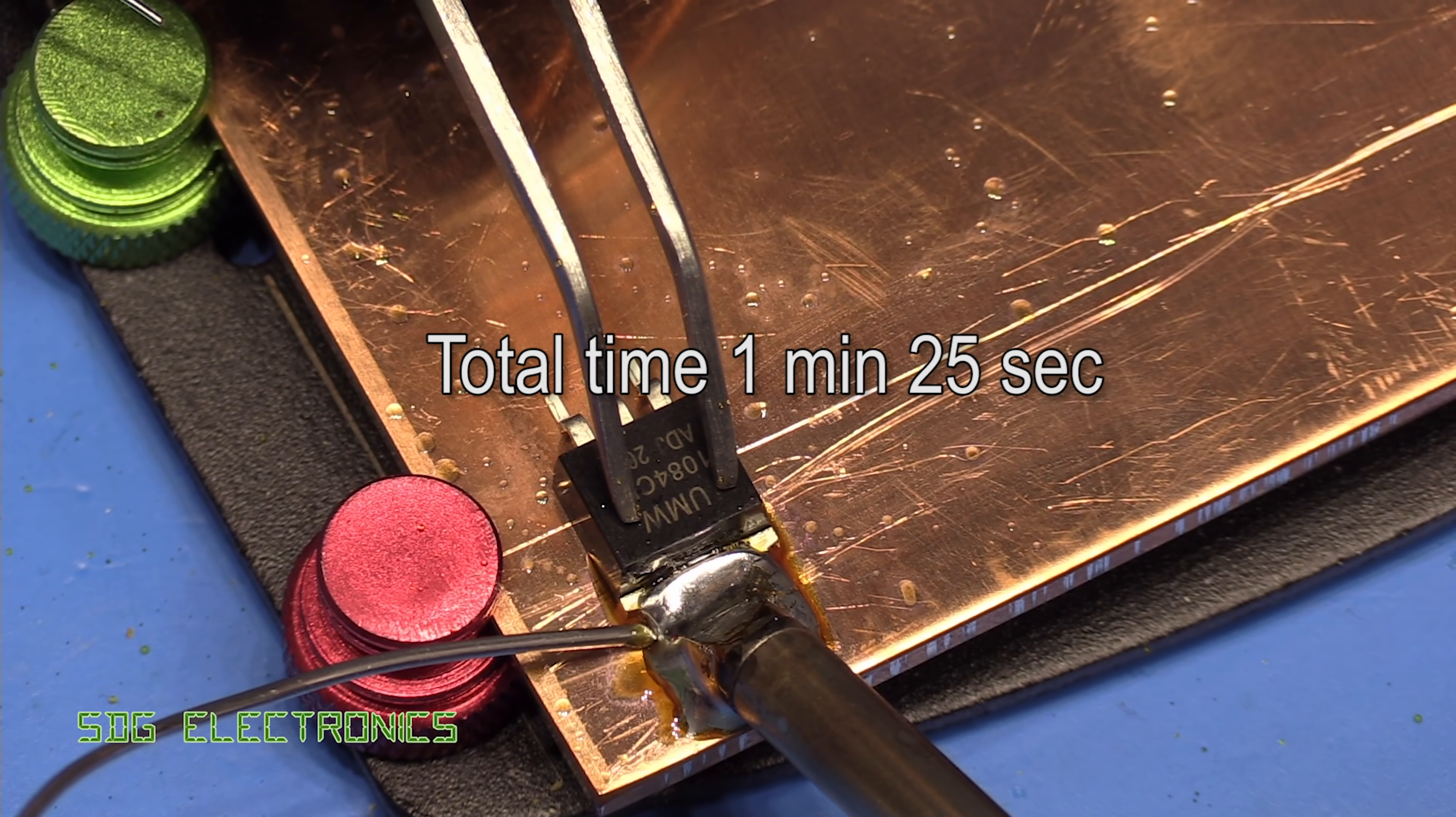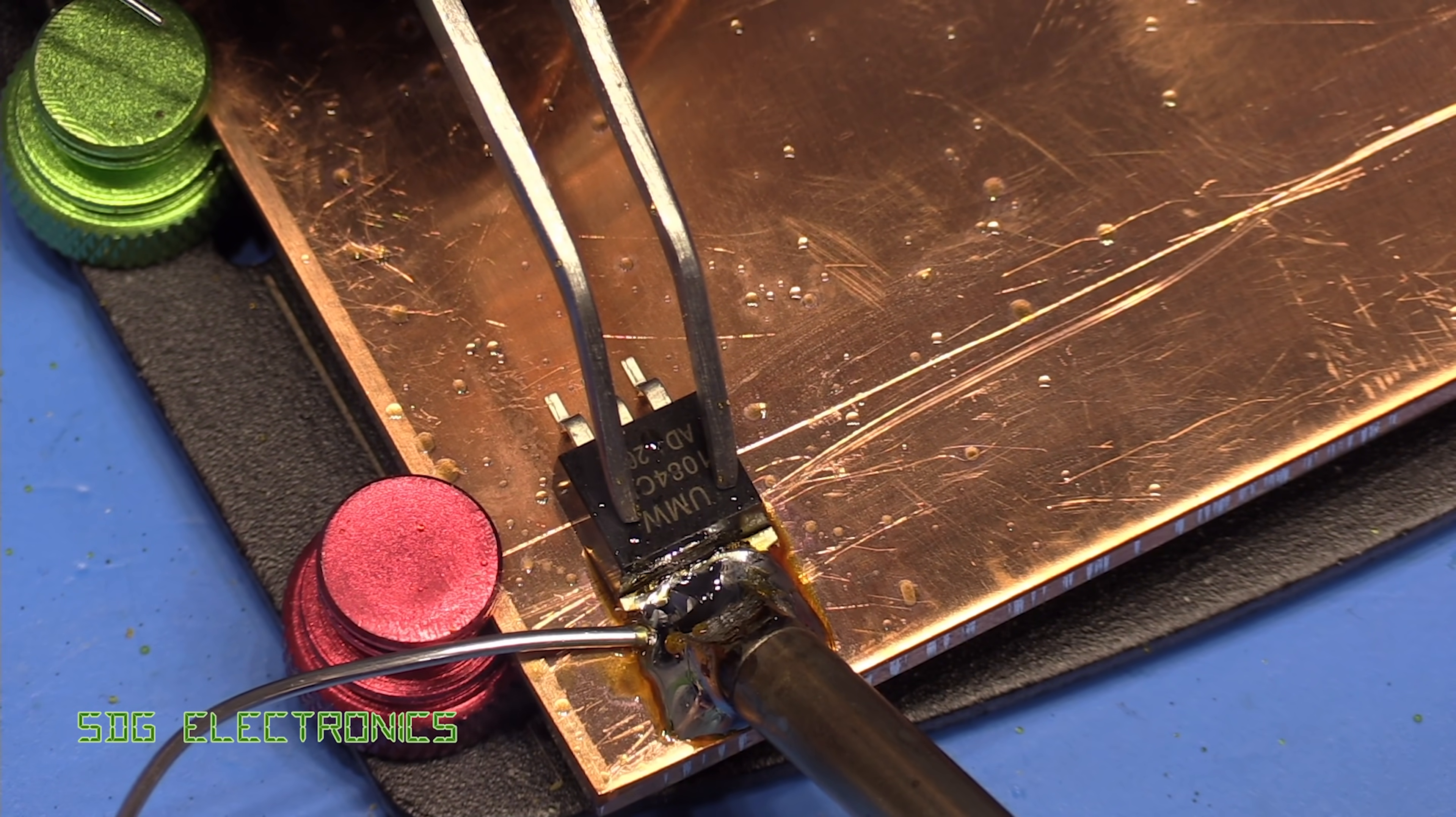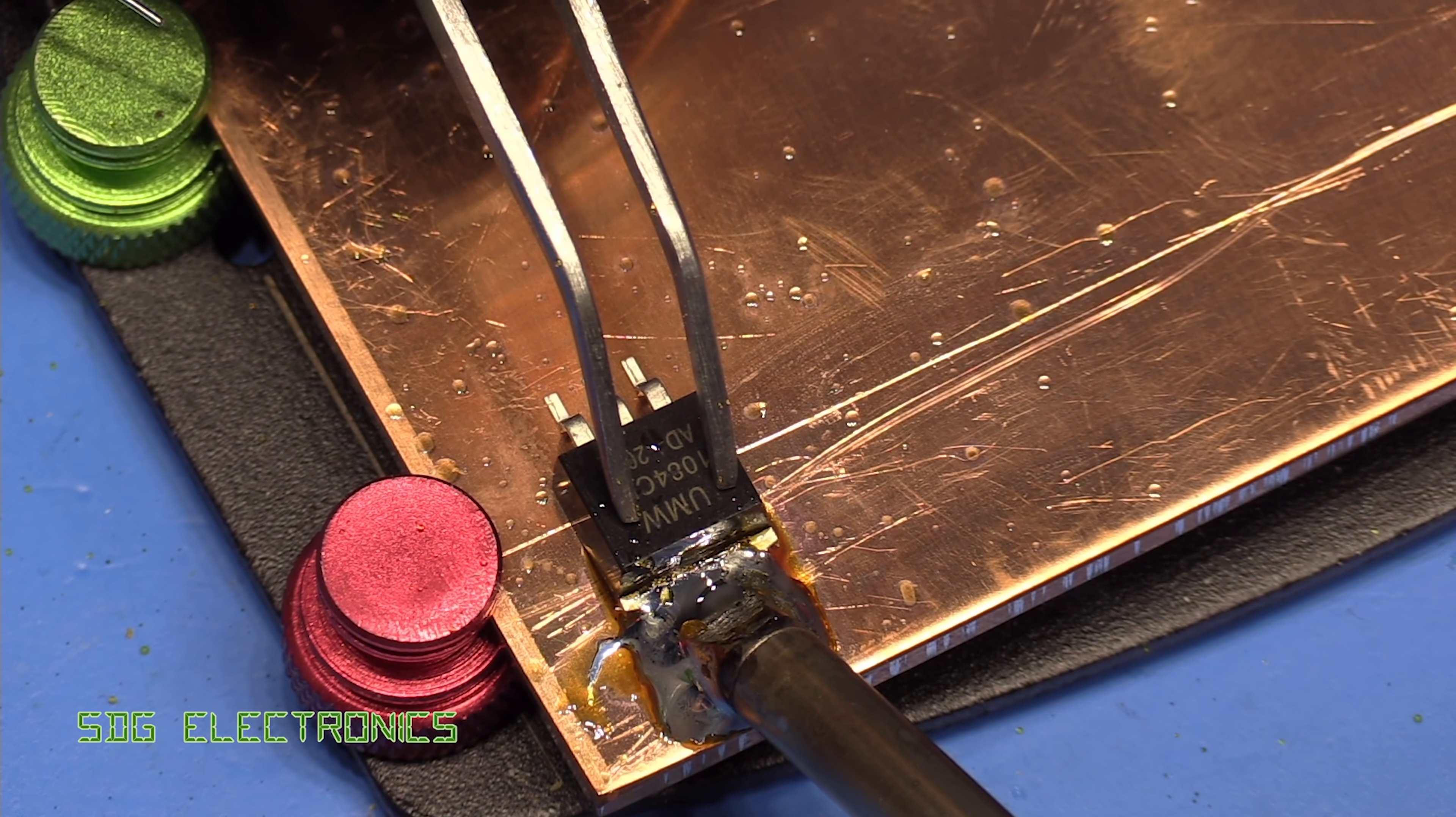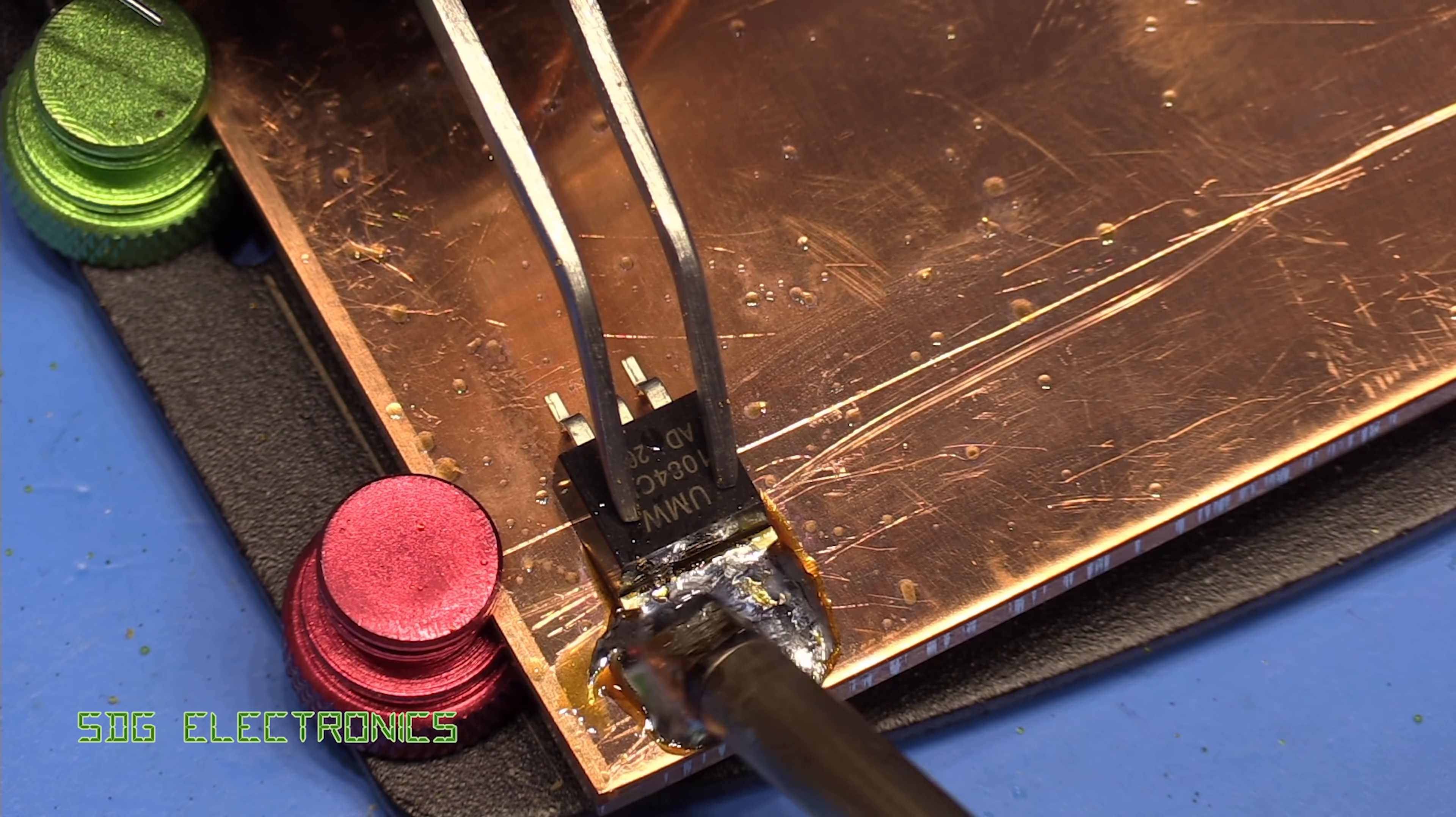You can see it's just starting to flow now. So this copper is pretty hot. We can probably melt some of the solder in the nearby area. Yeah, you can see. There we go.